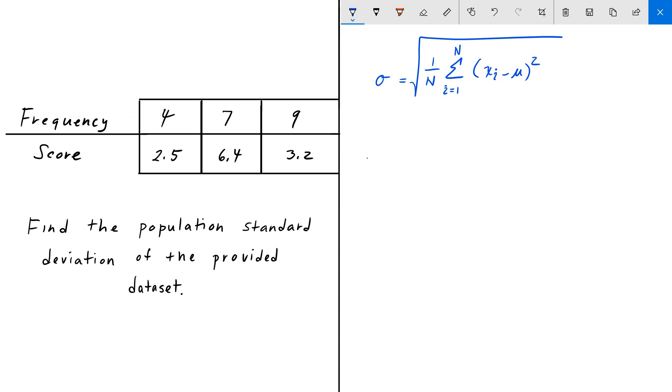The mean is gonna be 2.5 times 4 plus 6.4 times 7 plus 3.2 times 9, and then we have to divide this by the number of elements which is n.